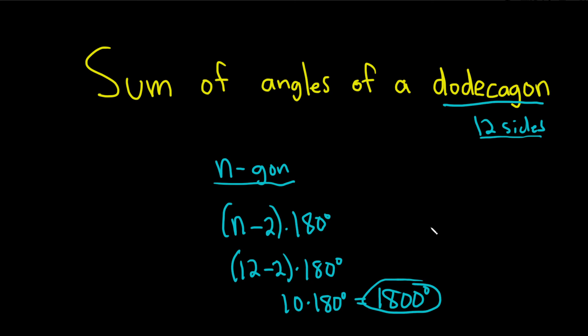So that would be the sum of the angles of a dodecagon. All you do is realize that a dodecagon has 12 sides, and then memorize the formula, and then take your 12 and plug it into the formula for an n-gon.